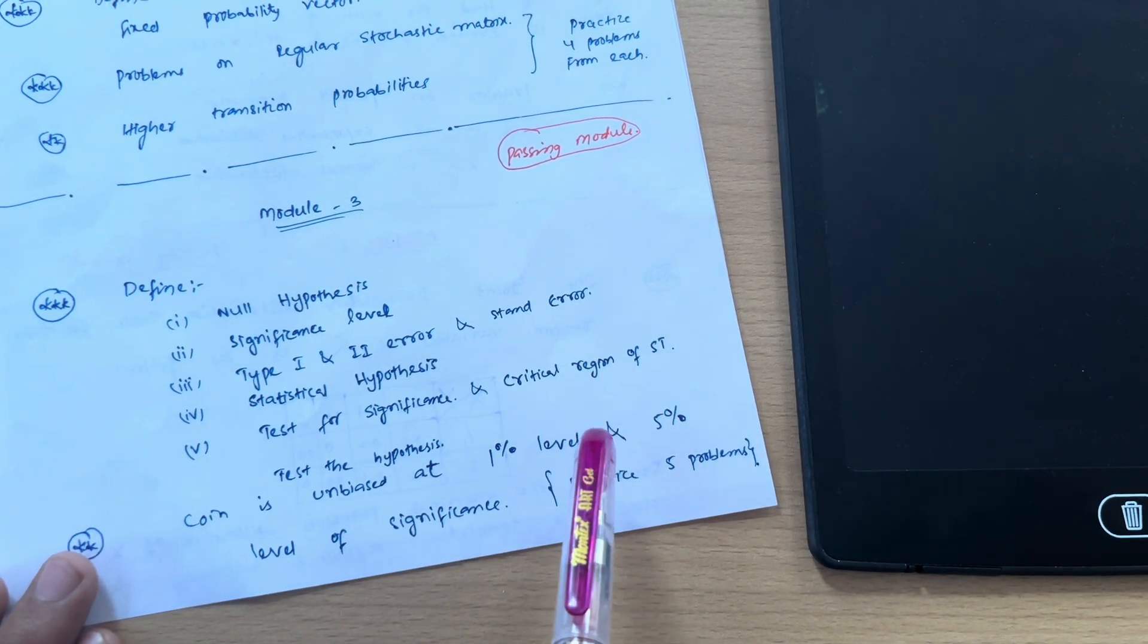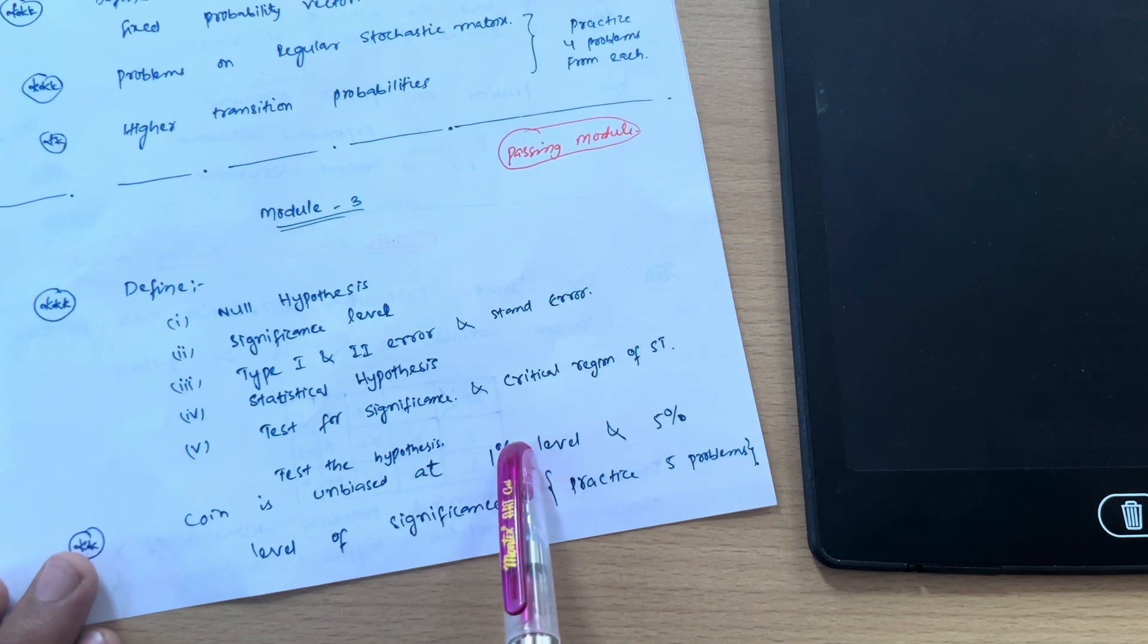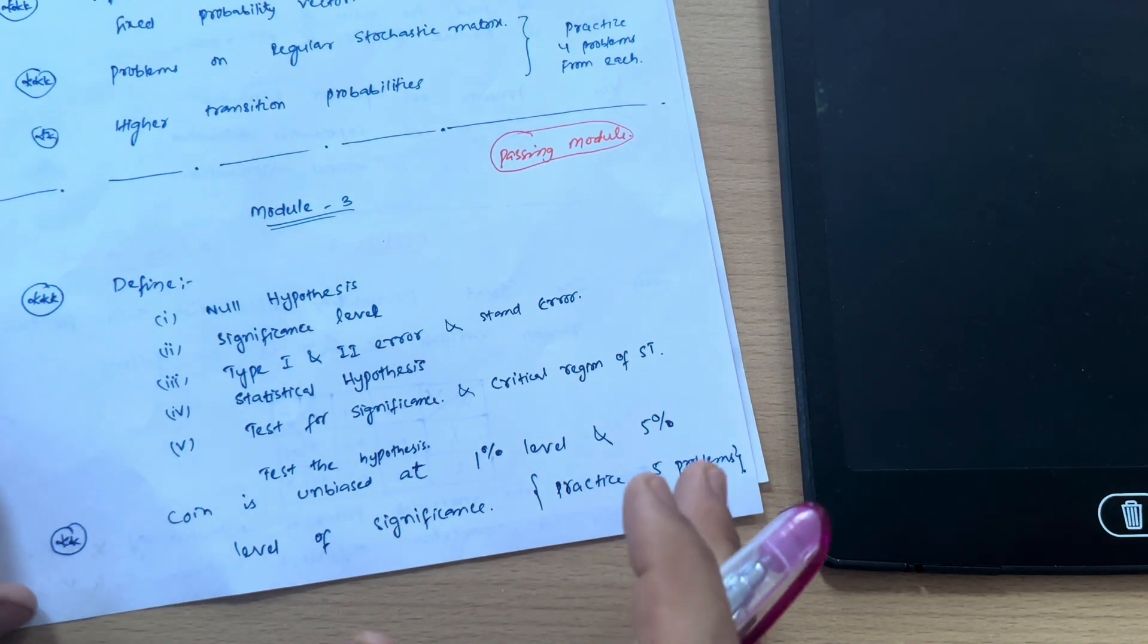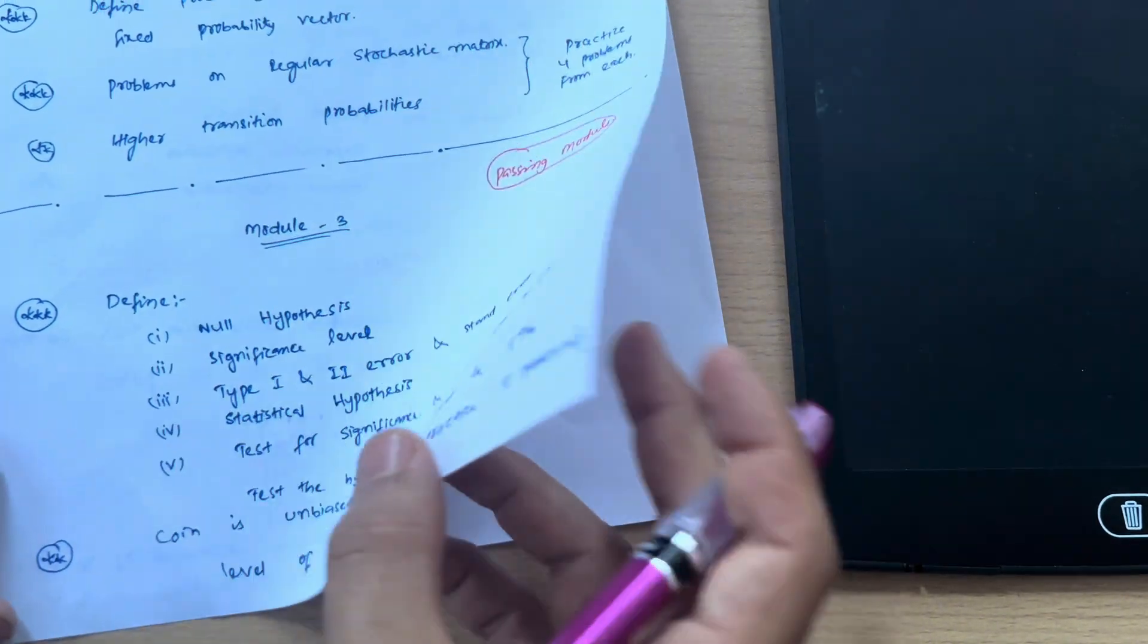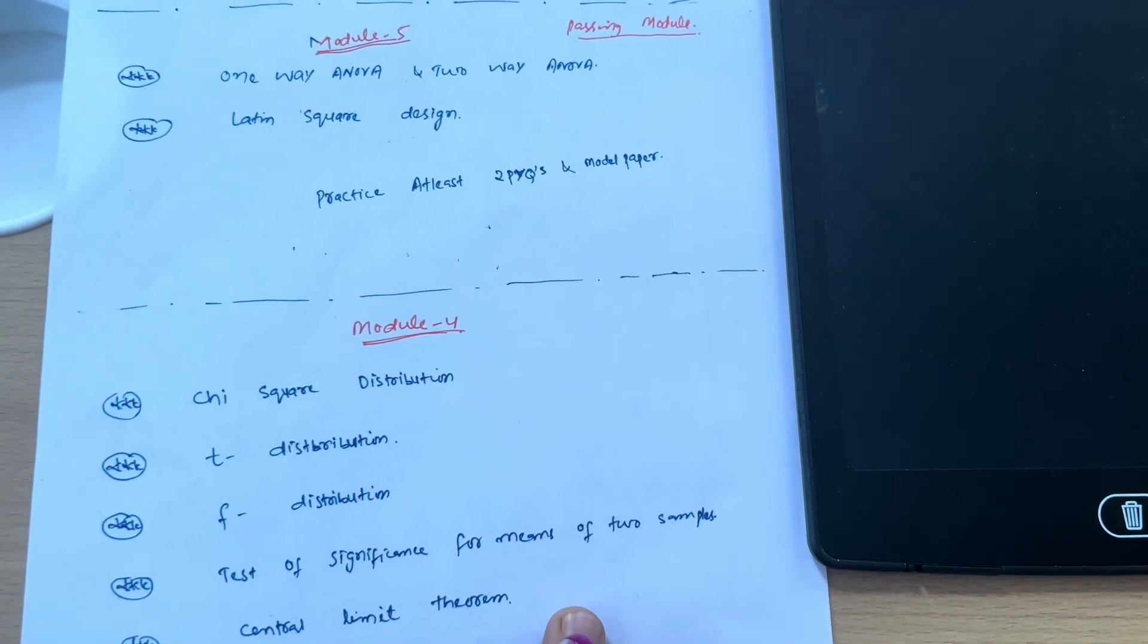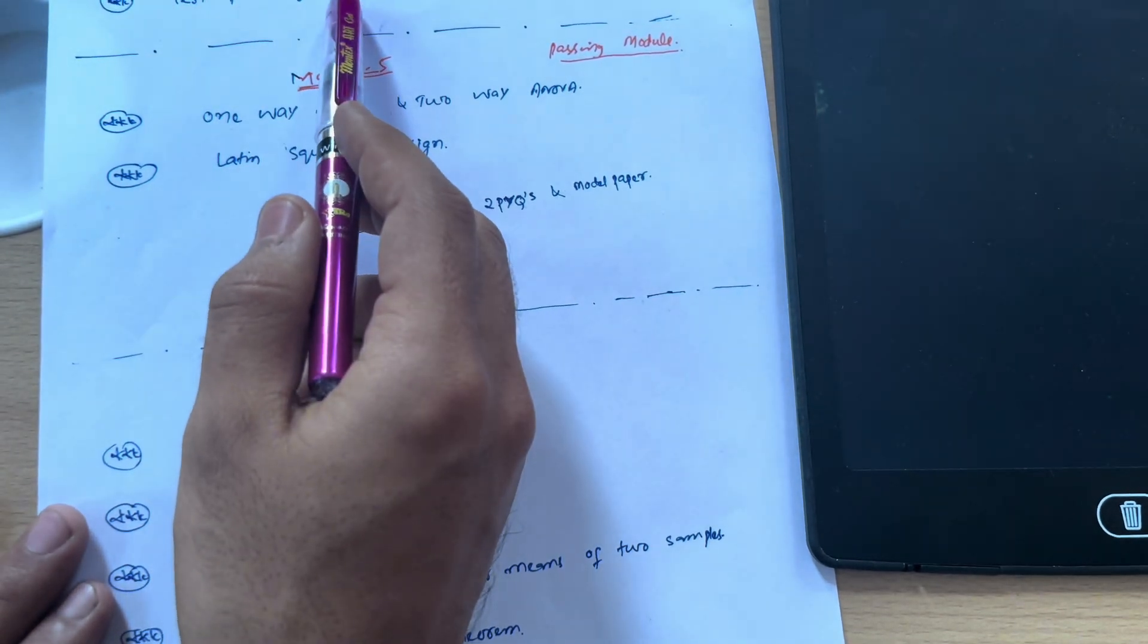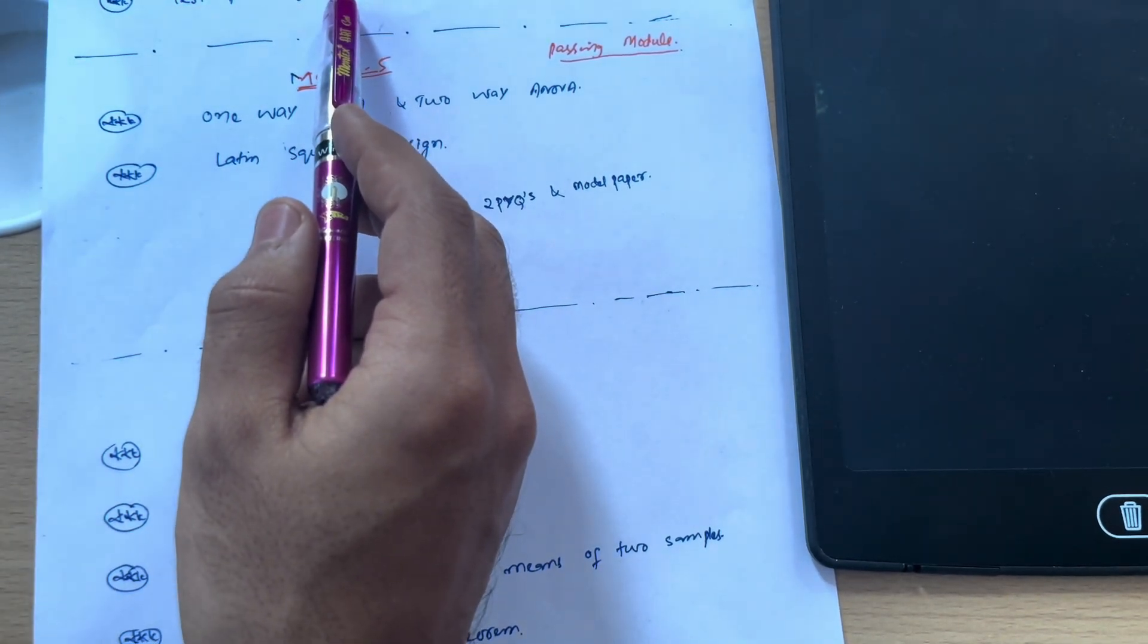This is a most important concept—you have to go through five problems from each: 1% level of significance and 5% level of significance. Problems are already available on the YouTube channel as I mentioned earlier in this video. Next we have test for large samples. If you refer previous question papers, you will get the idea how questions are coming in the VTU examination.